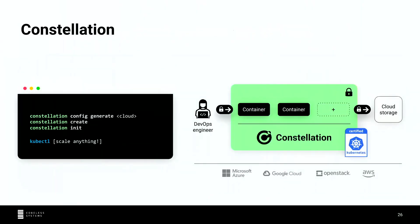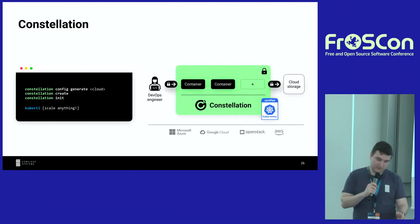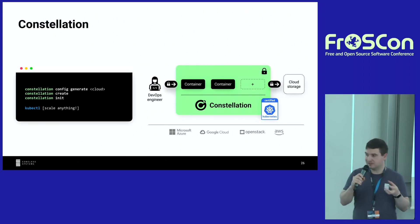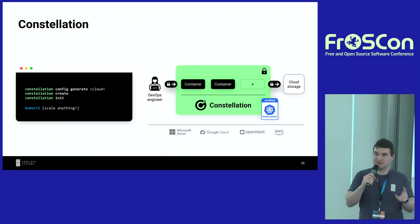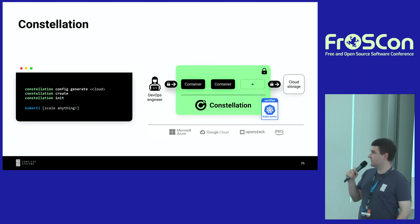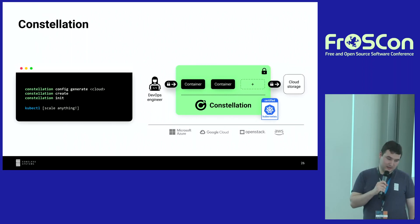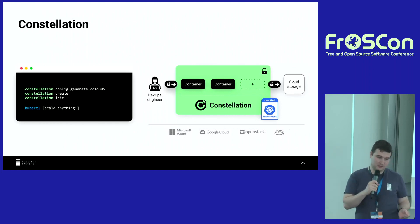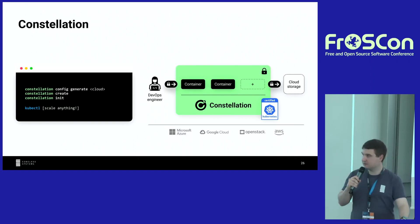Let's step back and think about what we actually want to achieve. We want a Kubernetes cluster where each node is a confidential virtual machine. We need to go from a single CVM to a whole cluster of VMs while still having a way to establish trust as the cluster administrator. There are different technologies and approaches — this is the approach we have chosen for Constellation.